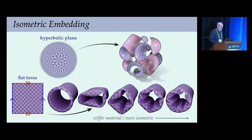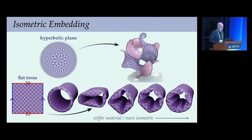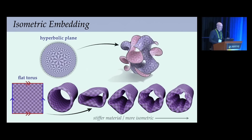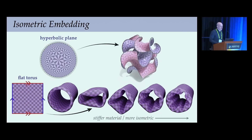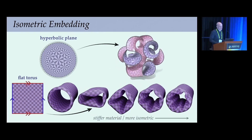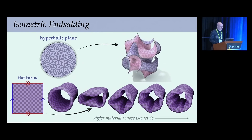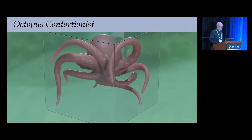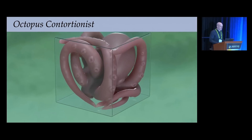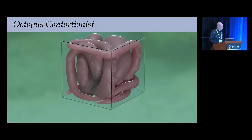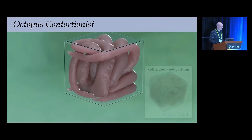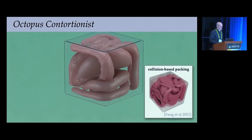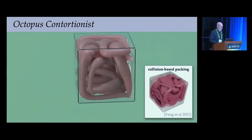The combination of elastic and tangent point energy is also useful outside the shape-space context. We use it to find near-isometric embeddings of abstract surfaces like the hyperbolic plane and the flat torus, and to do nonlinear packing. Here, our repulsion-based technique gives something quite different from a collision model, which would produce strict contact.